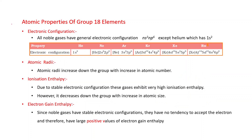Atomic properties of group 18 elements. Electronic configuration: the general outermost shell electronic configuration is ns2 np6, except helium which has 1s2. You can see from this table: Helium is 1s2, Neon is 2s2 2p6, Argon is 3s2 3p6, Krypton is 4s2 4p6, Xenon is 5s2 5p6, and Radon is 6s2 6p6.